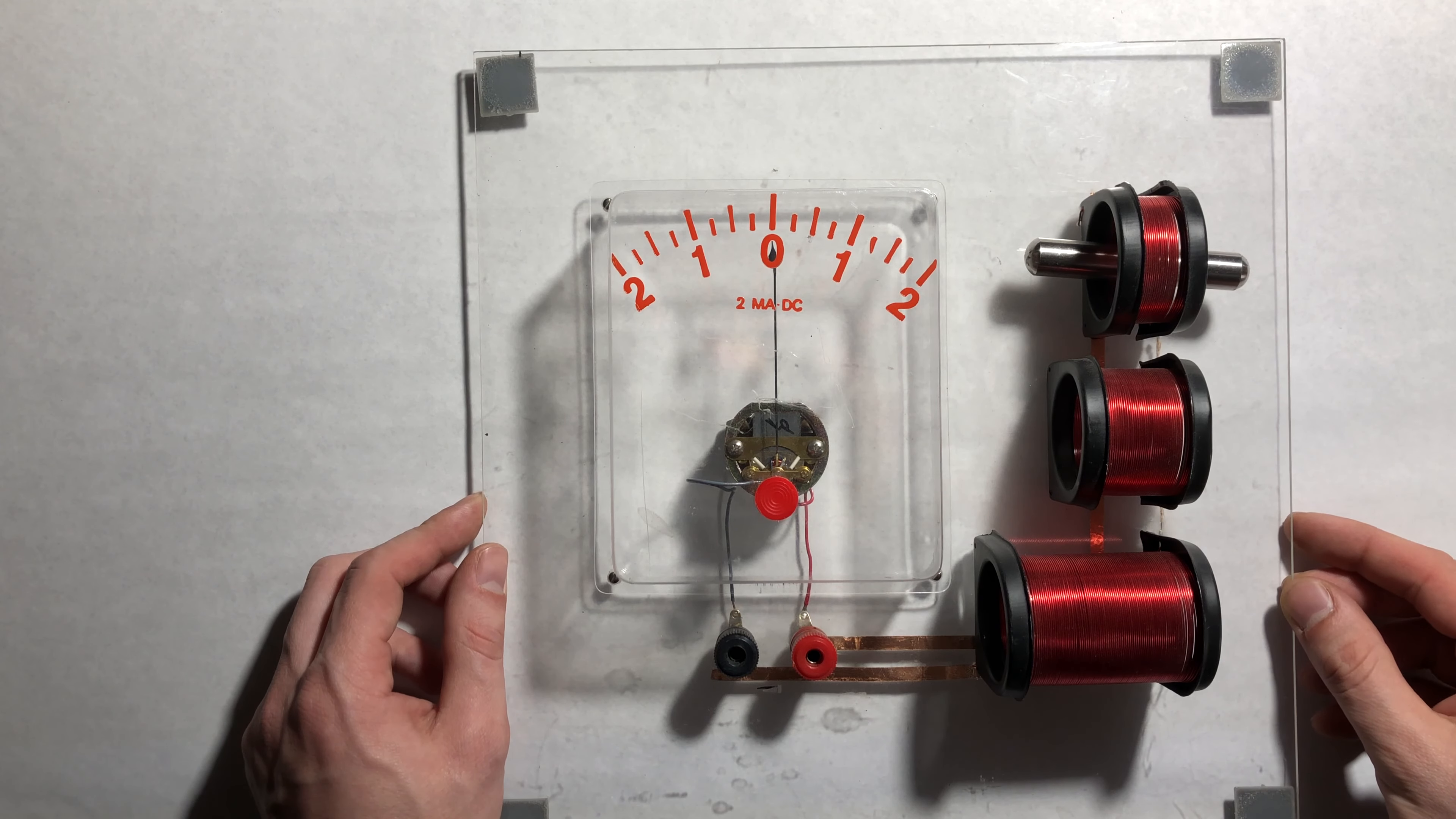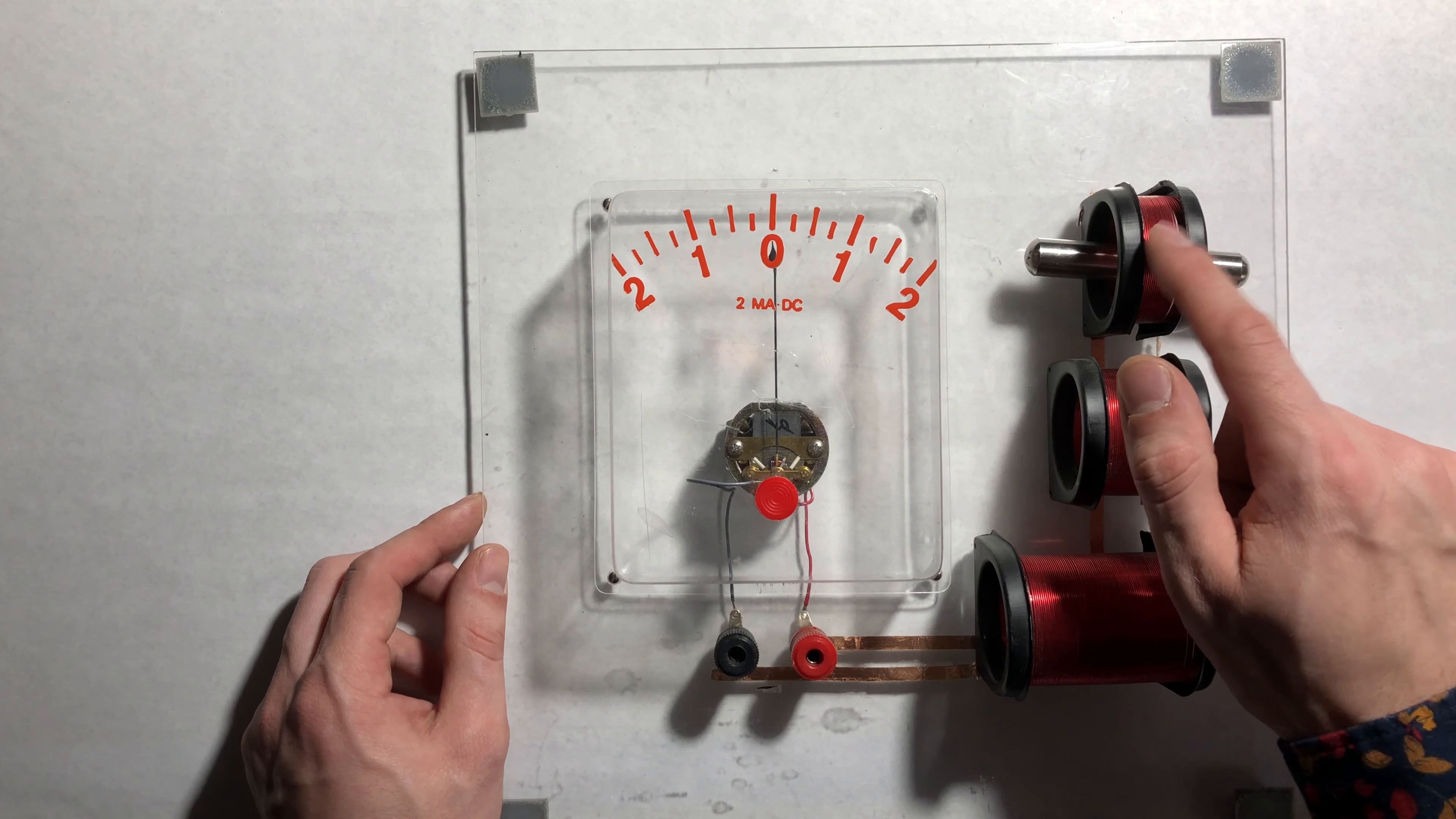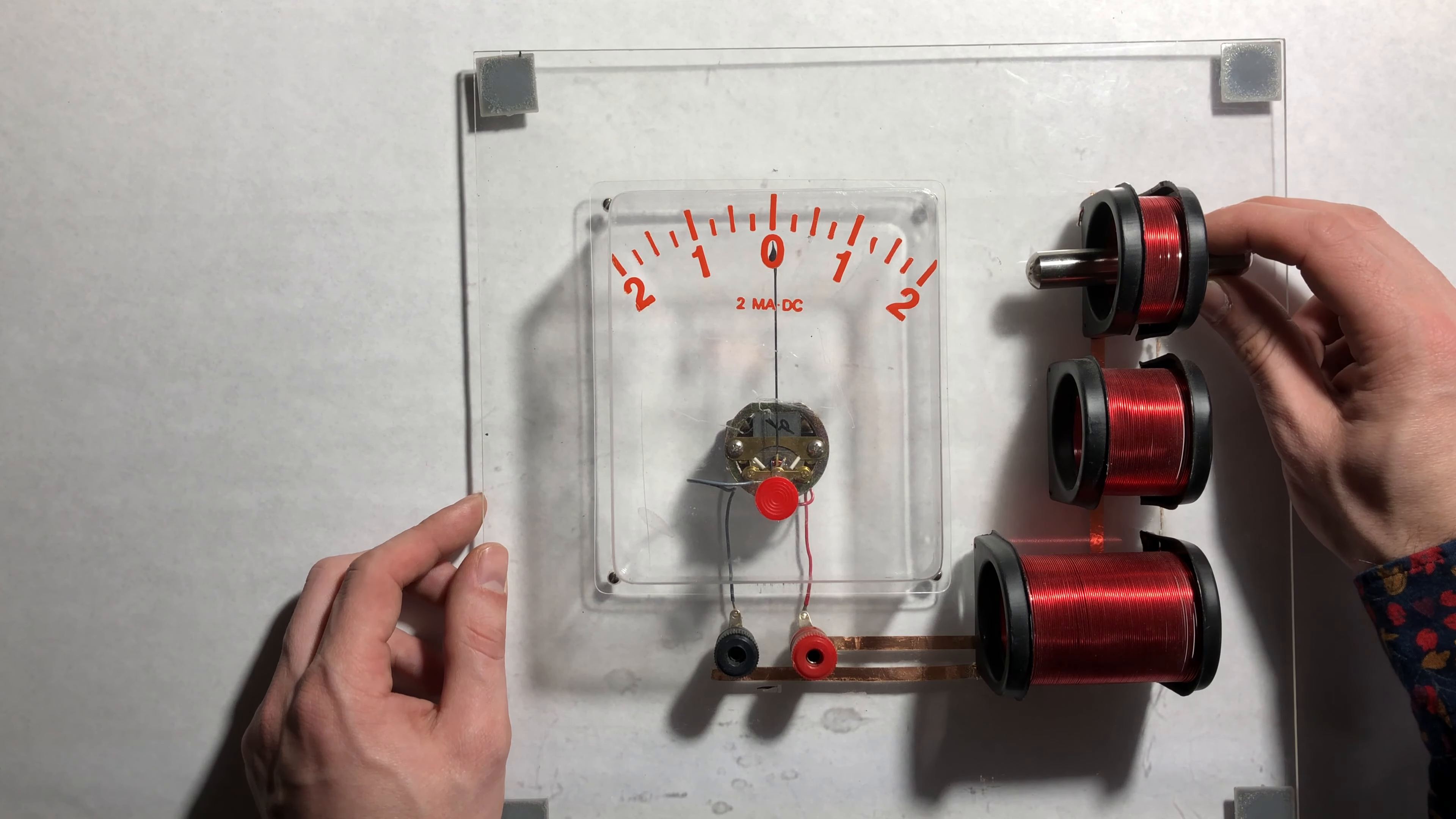Now the thing to remember always about Faraday's law is that it doesn't matter if we have magnetic flux, it matters if we have a changing magnetic flux. Well how could I change the magnetic flux in this area of wire? Well one way I could do that is I could take this magnet and I could remove it from the area of wire.